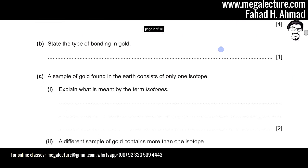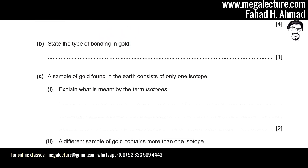The next part asks us to state the type of bonding in gold. Gold is a metal, so this is a simple question — the answer is metallic bonding.